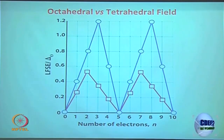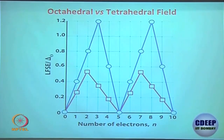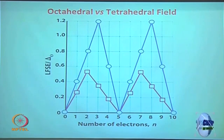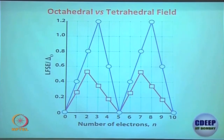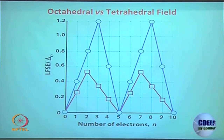Comparing D¹ in octahedral versus tetrahedral (both high spin, since tetrahedral has no low spin), you normalize the tetrahedral CFSE values using 4/9 Δ₀. This comparison of stability between octahedral and tetrahedral configurations is important for understanding site preferences in spinels and related topics.